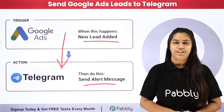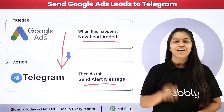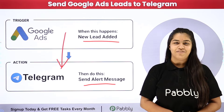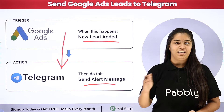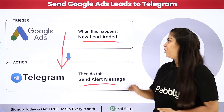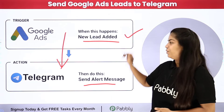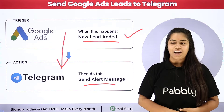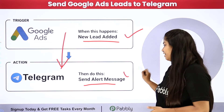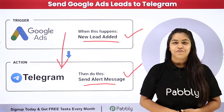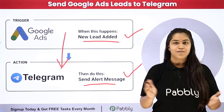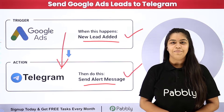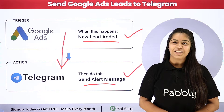Pably Connect is an amazing automation software. In Pably we have the concept of trigger and action. For the trigger we are going to use Google Ads and for the action we are using Telegram. If you also wish to learn this process step by step, follow me through the screen.